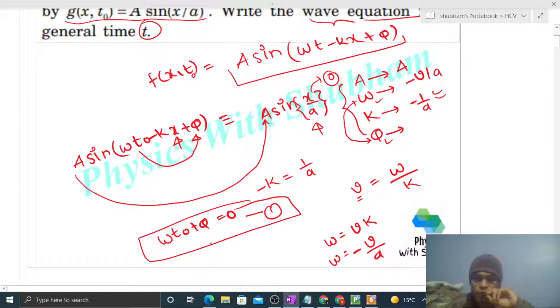Now find phi from here. Phi is simply minus omega times t naught. So omega is minus v/a, so this becomes plus, giving phi equals v·t₀/a.